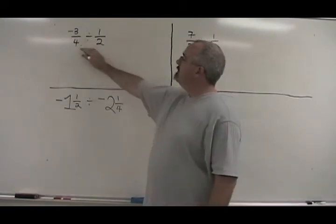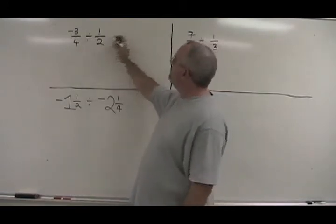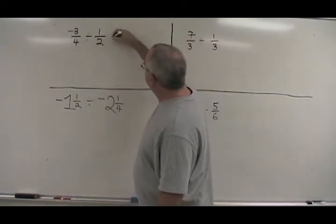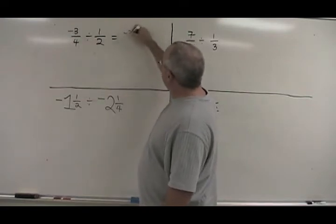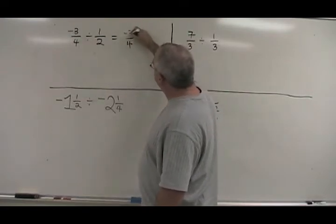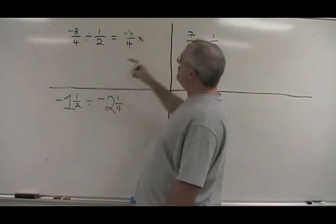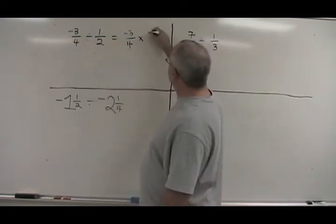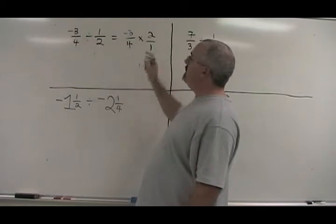Here we have negative 3 quarters divided by 1 half. Negative 3 quarters stays the same. We turn the 1 half upside down and get 2 over 1, and then we multiply it instead.